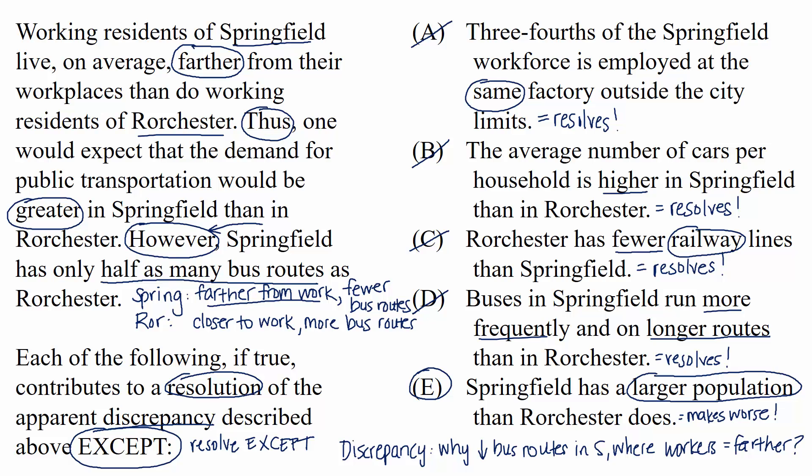So to recap: for resolve questions, you're reading with the purpose of understanding the discrepancy. It's really helpful to form a question around it — for example, why are there fewer bus routes in the city where people live farther from work? Then pretend that each choice is a proposed answer to that question and pick the one that actually does answer the question and shed light on the situation. Or in this case, since we had an except question, we needed to eliminate the choices that shed light on the situation and then select the choice that didn't resolve anything.